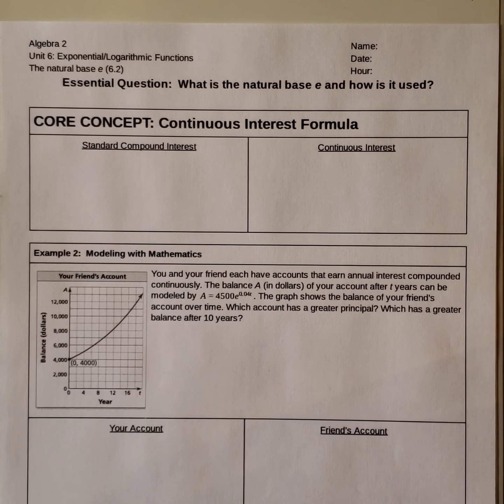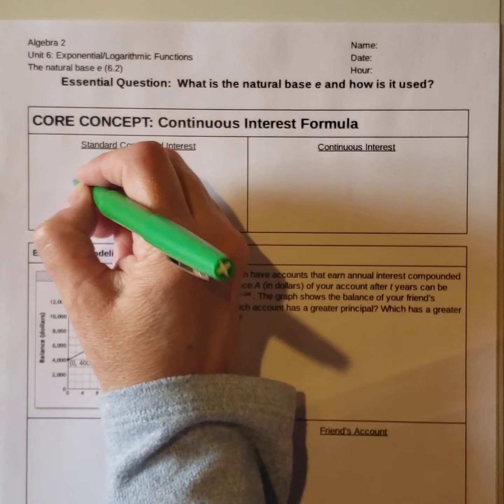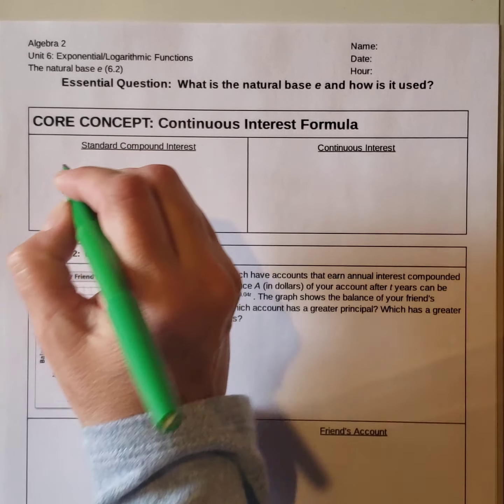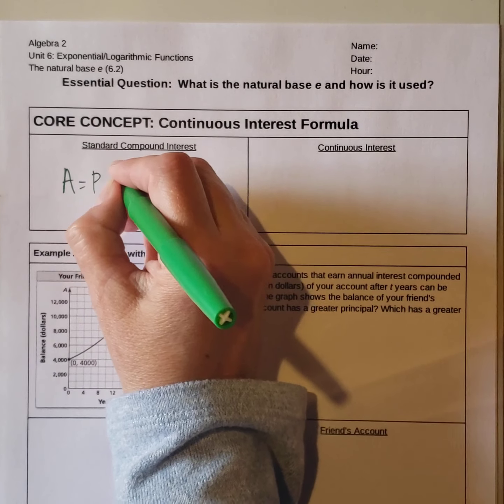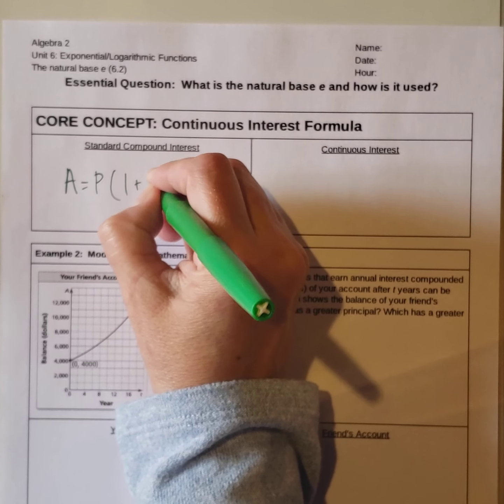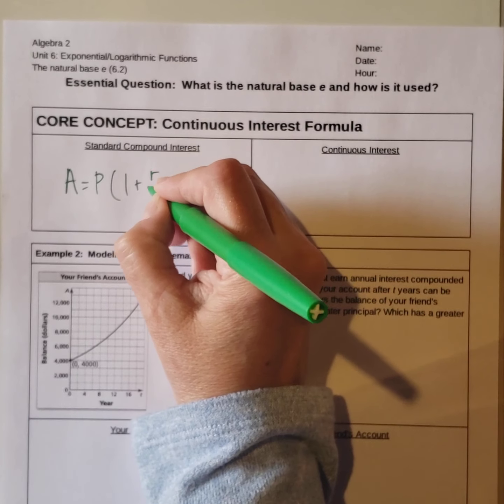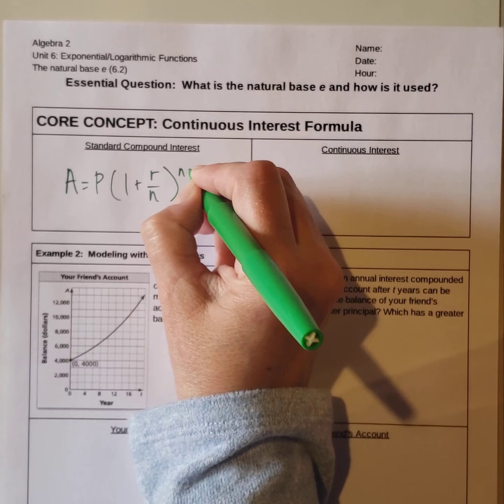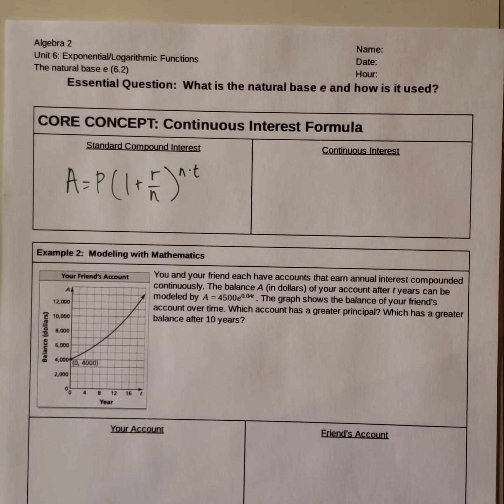So we have two different formulas. We looked at standard compound interest last week: A equals P times 1 plus r over n raised to the n times t. So that's what we were looking at last week.